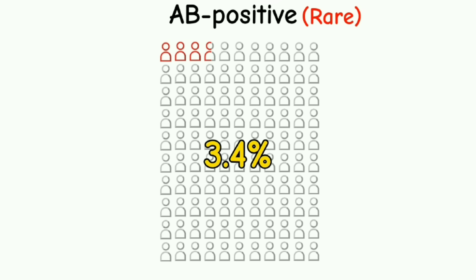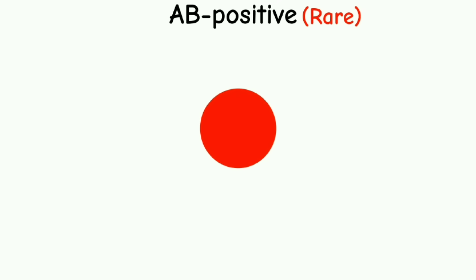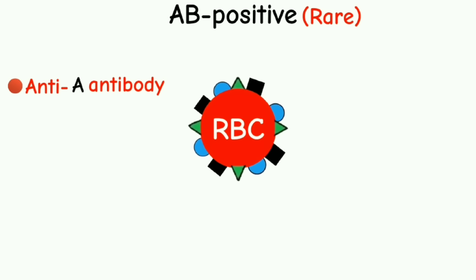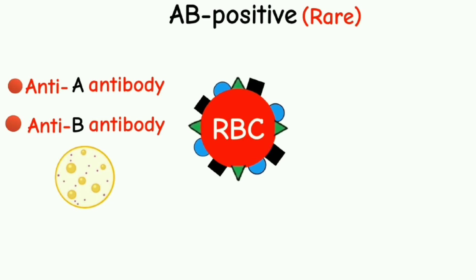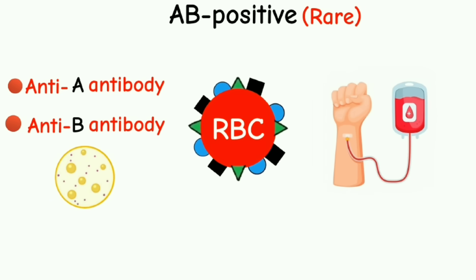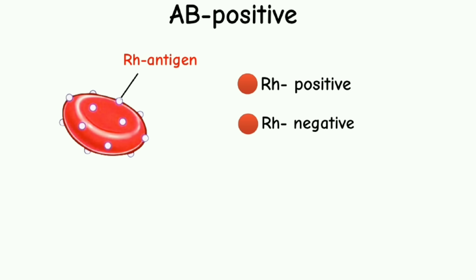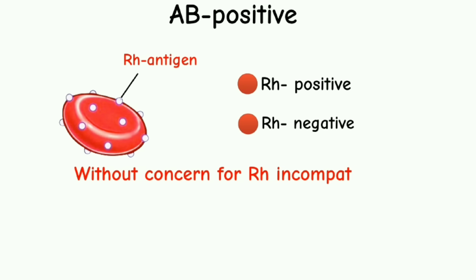AB positive is one of the rarest blood types with only 3.4% of the U.S. population having this blood type. People with this blood type have all three major antigens A, B, and RHD on the surface of their red blood cells. The presence of A and B antigens ensures that they do not produce anti-A or anti-B antibodies in their plasma. Being RH positive means they also have the RHD antigen, and they can receive RH positive or RH negative blood without concern for RH incompatibility.